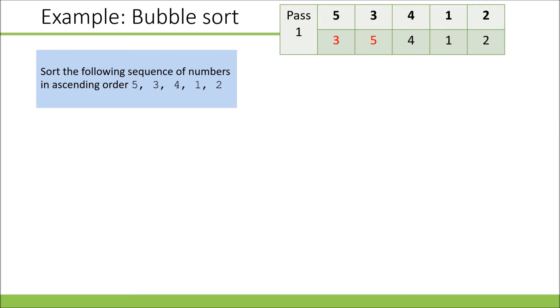In pass one, we compare the first two numbers, the five and the three. The five is bigger than the three, and because we want ascending order, we need to swap those around. After the first comparison, we now have three and five switched around.